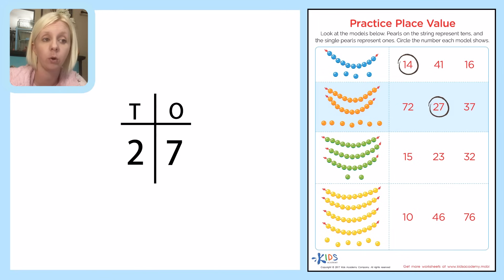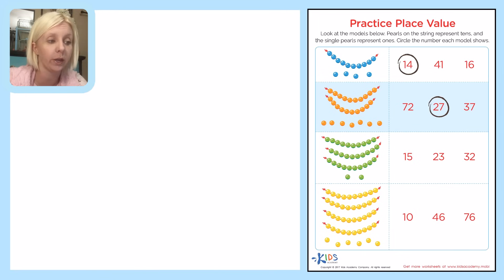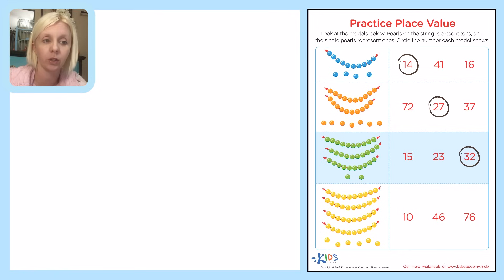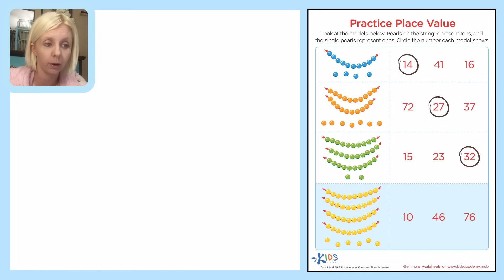There are two ways to do it. For the next one, let's just count on: count by tens — 10, 20, 30 — then count up: 31, 32. Find the number 32 and circle it.